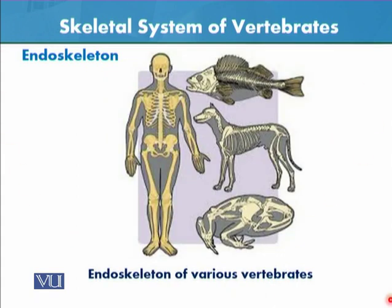There are various examples of the endoskeleton in various animals — fish, dog, frog, and human. Is skeleton ke baghair body cannot support itself. If you imagine a human without a skeleton, we cannot move upright, internal organs cannot be supported — it will just be a lump of flesh that thuds down without the skeleton. These are the skeletons we have shown you, and this is all about the skeletal system of the vertebrates.